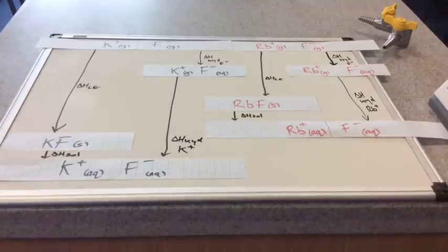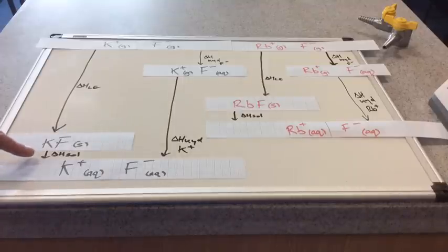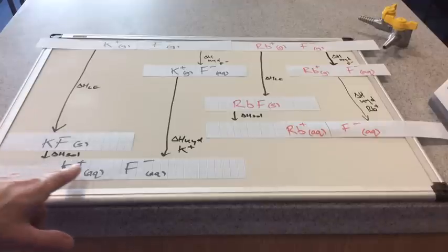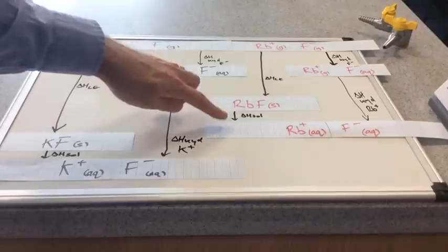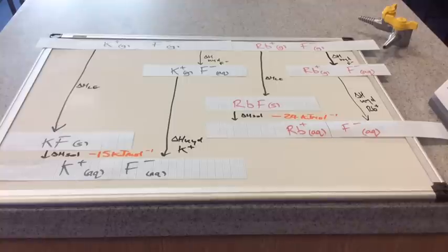Side by side now on the board, we've got both of the cycles — the Born-Haber cycles — for the enthalpy change of solution, which is represented by this level here. It's the solid ionic lattice going to the aqueous ions, and we've got the same there on both sides.